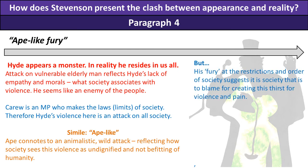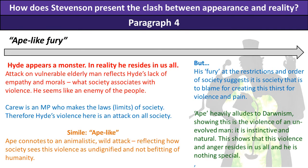But his fury — note that he is furious when attacking the MP — is directed at the restrictions and order of society, suggesting that society is actually to blame for creating this thirst for violence and pain. The word 'ape' also heavily alludes to Darwinism, showing this is the violence of an unevolved man — instinctive and natural. This shows that this violence and anger resides in us all and Hyde is nothing special. The reality of Hyde is that despite his appearance, he is actually within us all, and his fury is based only on the limits that we have placed upon him.